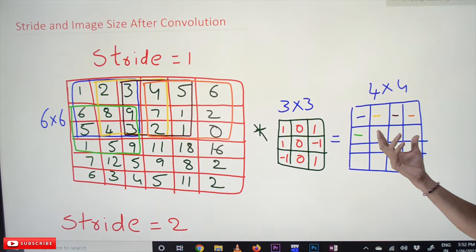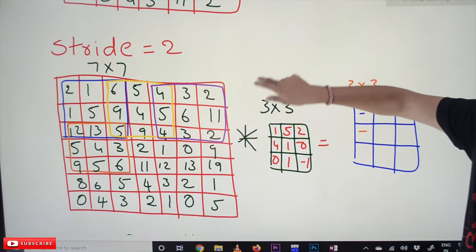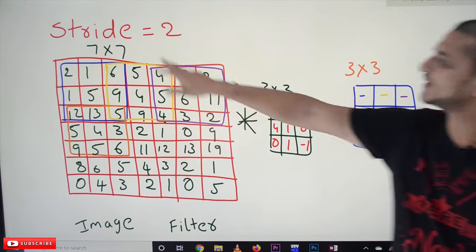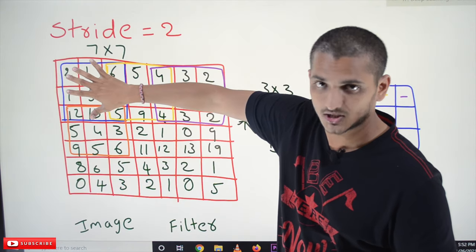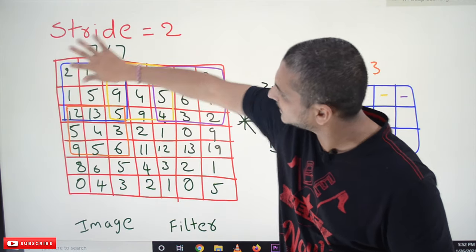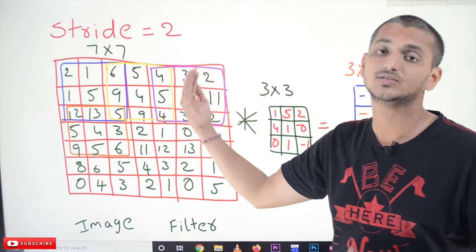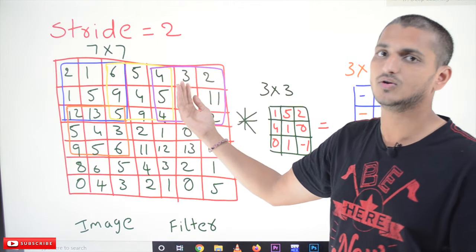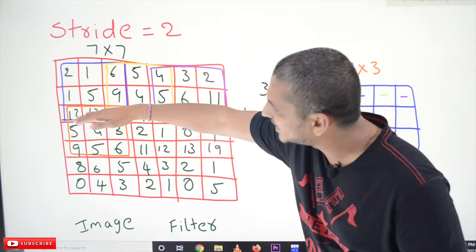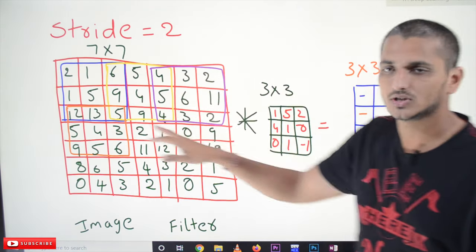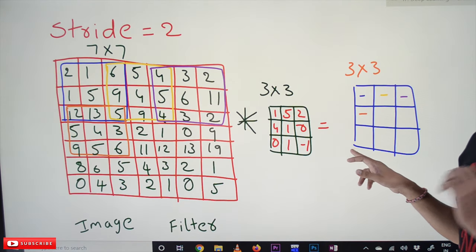Now if we take stride equals 2, let's take a 7 by 7 image. First we place our 3 by 3 filter on the first position, then we move 2 steps right, then 2 steps again, then 2 steps down. The final output we get here is a 3 by 3 output image.